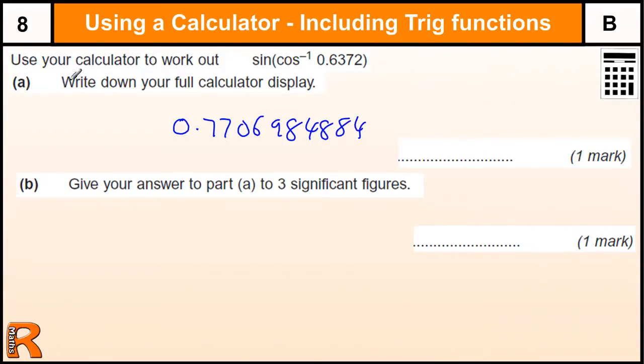And then there's one mark for rounding it to three significant figures, which is going to be, these are 1, 2, 3 significant figures, so we're going to chop it off there, and we need to check that number, which is above halfway, so it's going to be 0.771 to three significant figures.